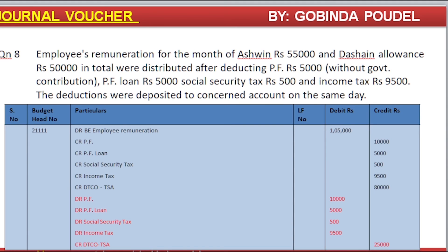The next question: Rs. 55,000 and Rs. 50,000 in total were distributed after deducting Rs. 5,000 without government contribution, Rs. 5,000, Social Security Tax Rs. 500 and Income Tax Rs. 9,500. The deducted amounts were deposited to the concerned office on the same day.